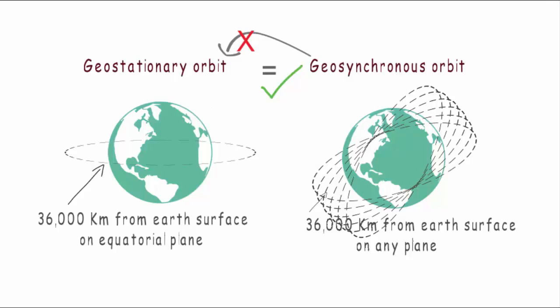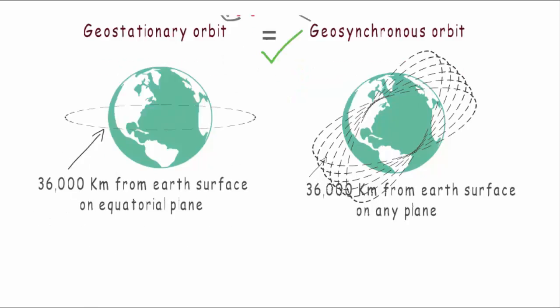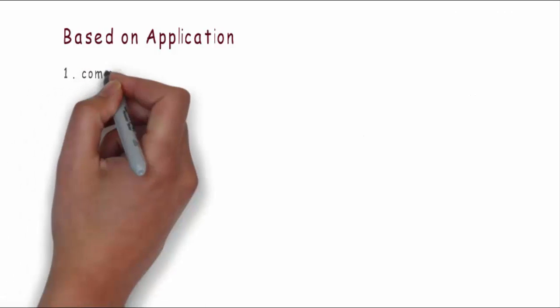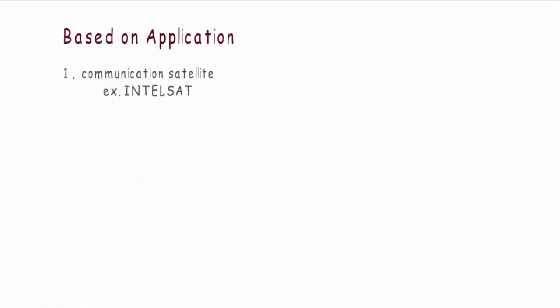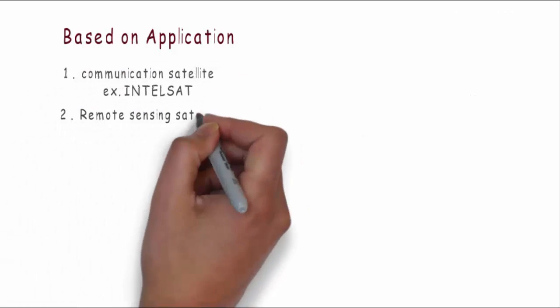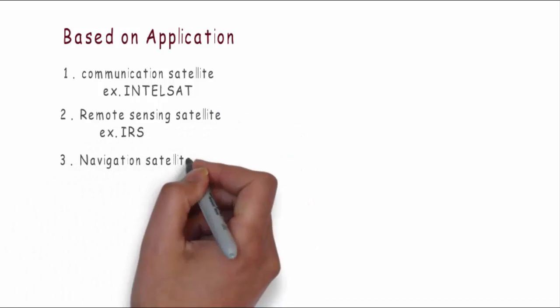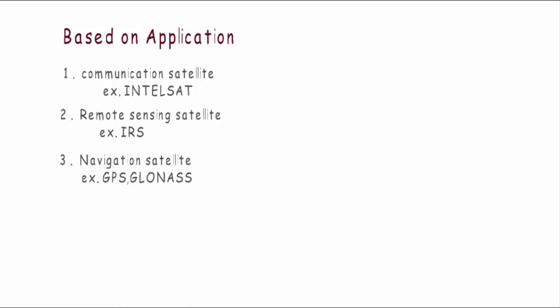Now let's see some different parameters of classification of satellites. Based on applications, satellites may be divided as communication satellite like INTELSAT, remote sensing satellite like IRS, and navigation satellite for example GPS of US and GLONASS of Russia.